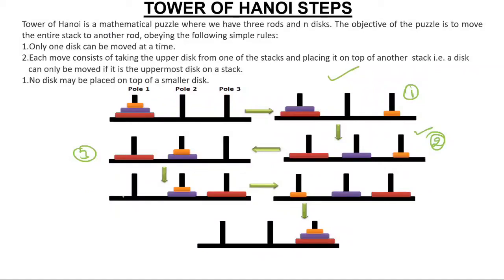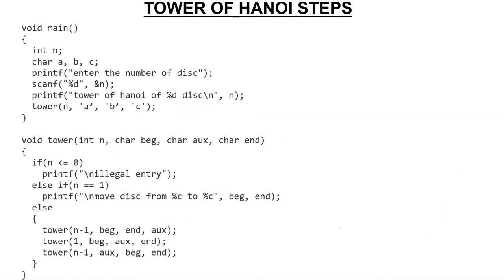In the fourth step, we move the largest disk from pole one to pole three. In the fifth step, we move the smaller disk from pole two to pole three. In the sixth step, we move the middle disk on top of the largest disk. In the seventh step, we move the smaller one on top, and finally we get the same arrangement. The total number of steps to solve this problem is seven.